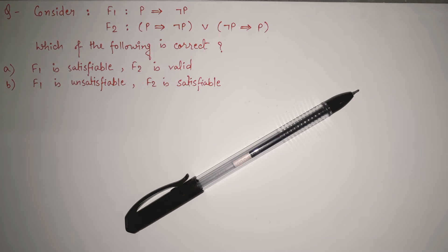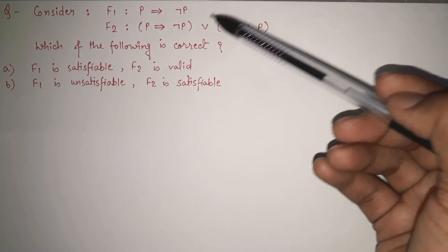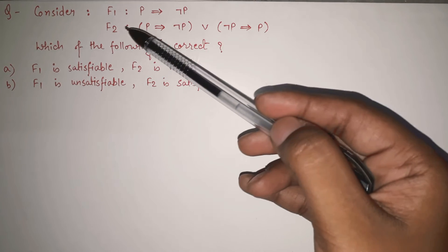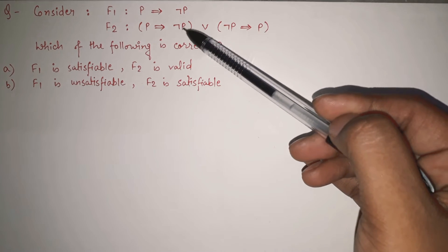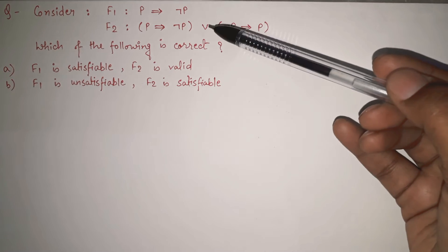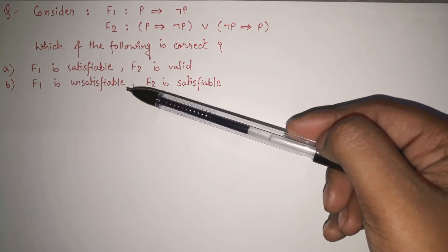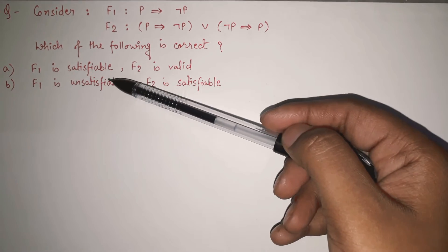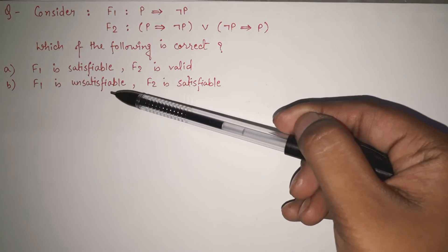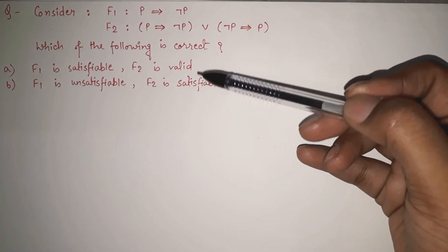The current question that we are taking: consider F1 and F2, two functions given. F1 says P implies negation of P, and F2 says P implies negation of P, or negation of P implies P. These two are given. Now we have to say which of the following is correct. The first option says F1 is satisfiable and F2 is valid, and the second option says F1 is unsatisfiable and F2 is satisfiable. We have to show which of these options is correct.